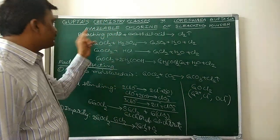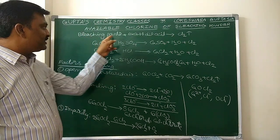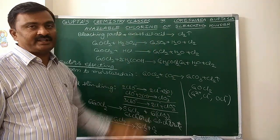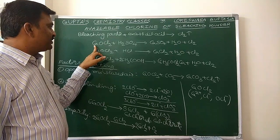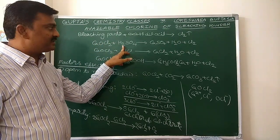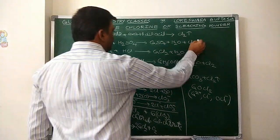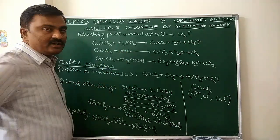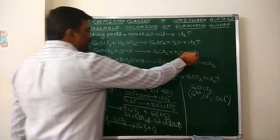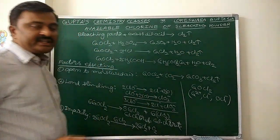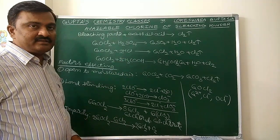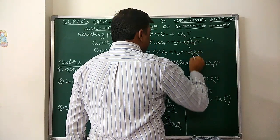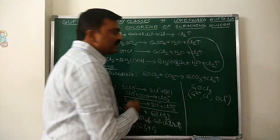Now, come to Available Chlorine. When bleaching powder reacts with excess of dilute acids, chlorine gas will be liberated. For example, when bleaching powder reacts with excess of dilute sulfuric acid, calcium sulfate and chlorine are liberated. When bleaching powder reacts with excess of hydrochloric acid, chlorine is also liberated. This chlorine liberated is called Available Chlorine.